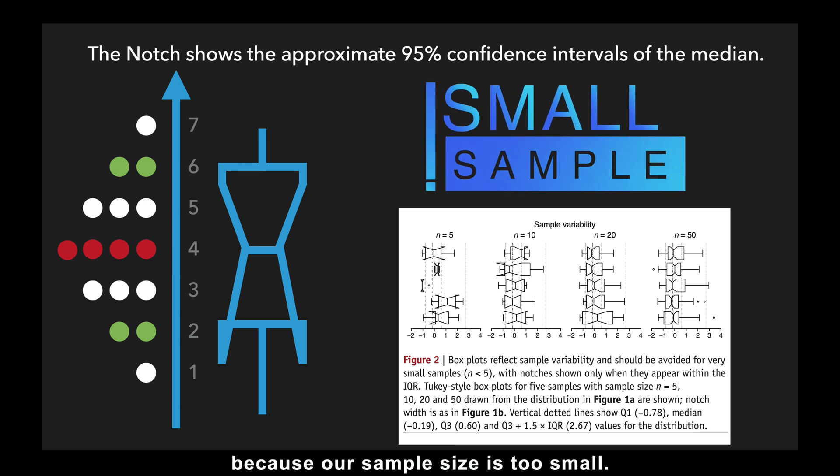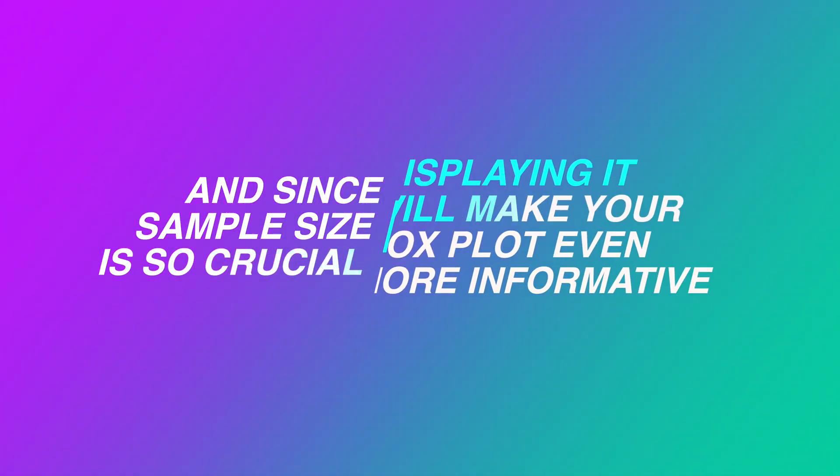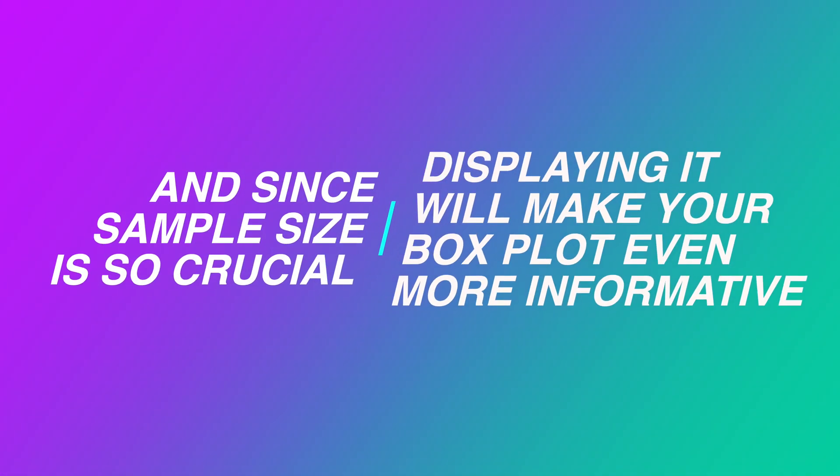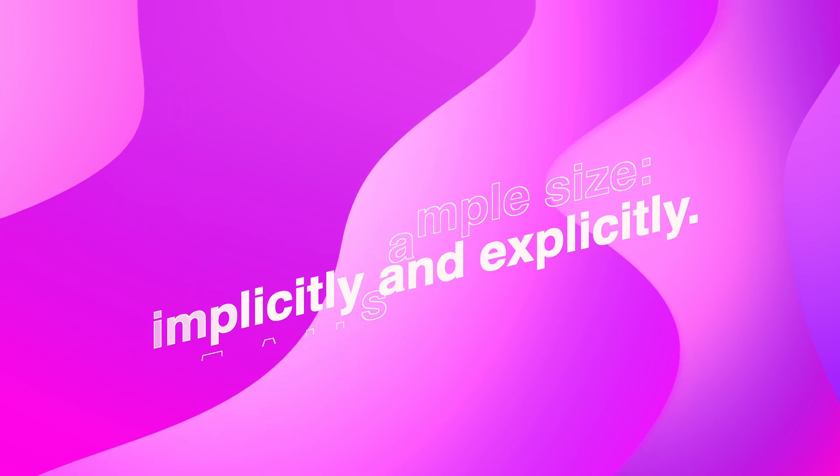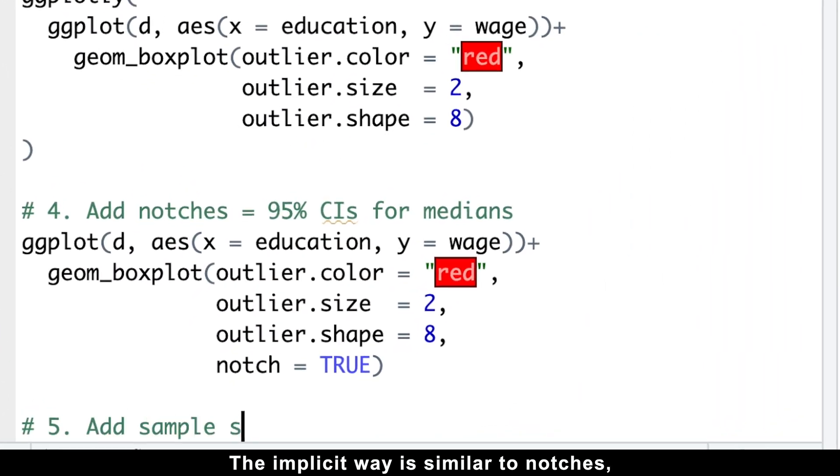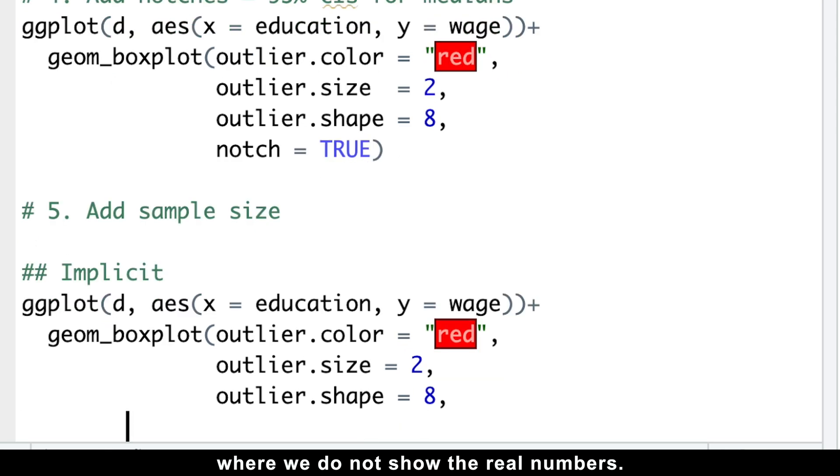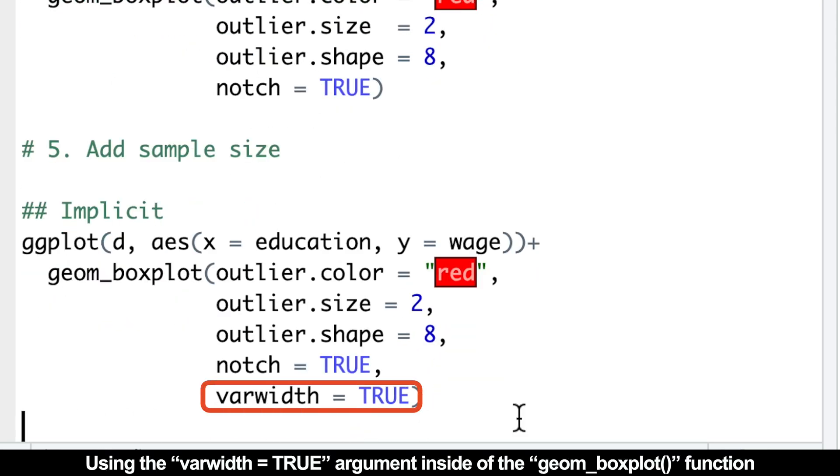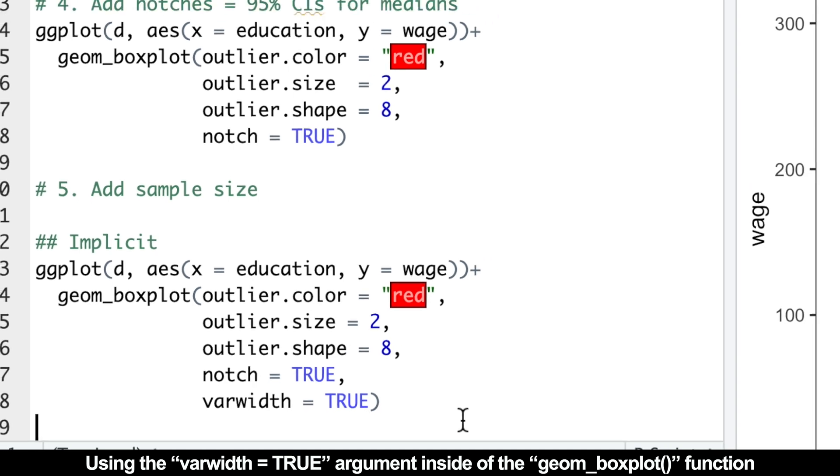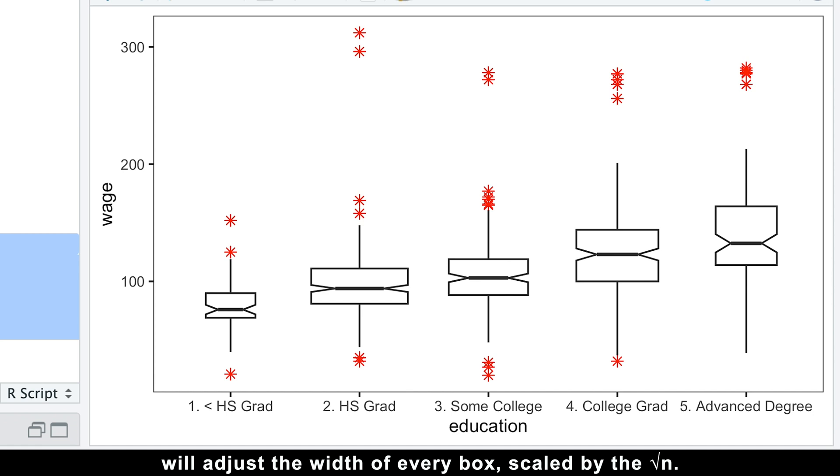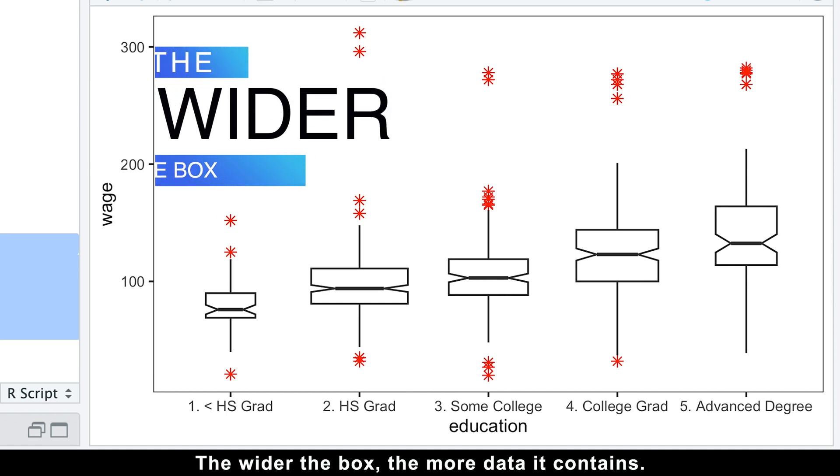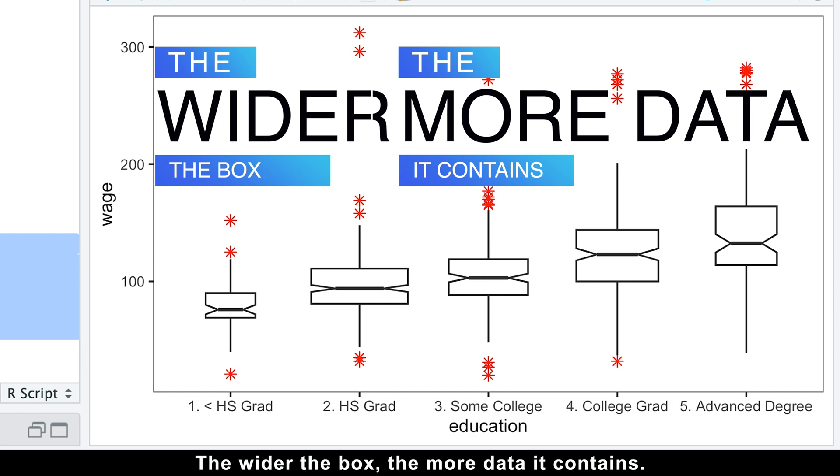And since sample size is so crucial, displaying it will make your boxplot even more informative. And there are two ways to add sample size to every plot, implicitly and explicitly. The implicit way is similar to notches, where we do not show the real numbers. Using the varwidth equals true argument inside of the geom_boxplot function, we'll adjust the width of every box, scaled by the square root of n. The wider the box, the more data it contains.